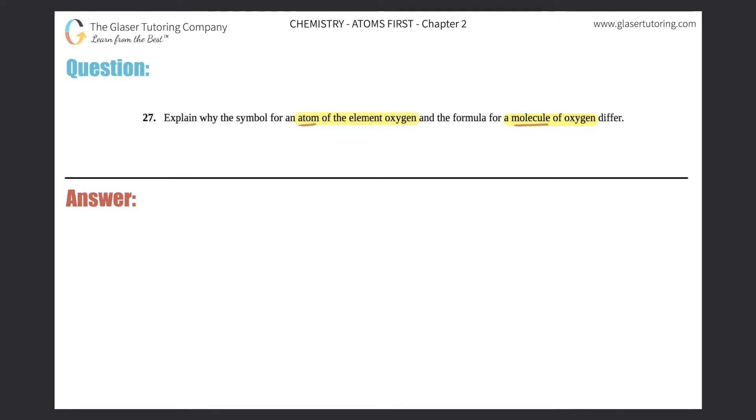But moving on, so what's the difference between an atom of an element oxygen and a molecule? Just know that an atom just represents one box—so I'll put that here—one box on the periodic table.